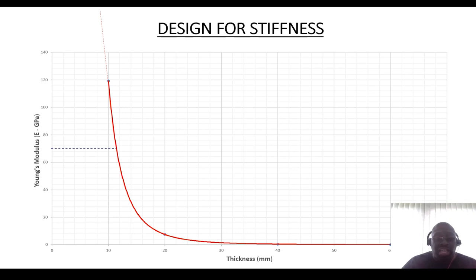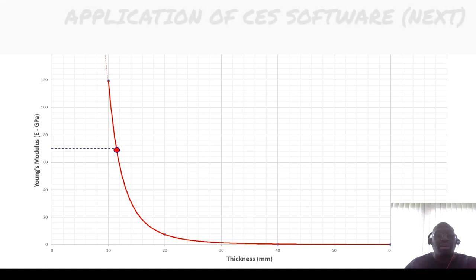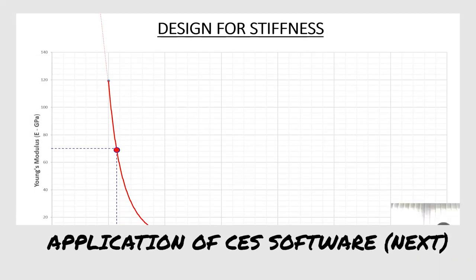I remember citing an example where we looked at aluminum. So if I'm looking at aluminum, aluminum typically has a Young's modulus between 69-70 GPa. So we project from the y-axis that cuts the graph at this point, and we project towards the x-axis to identify what would be the thickness.